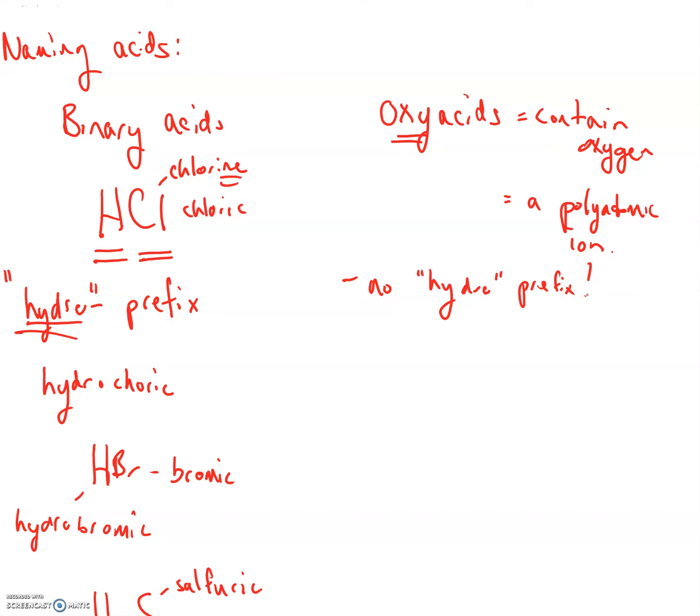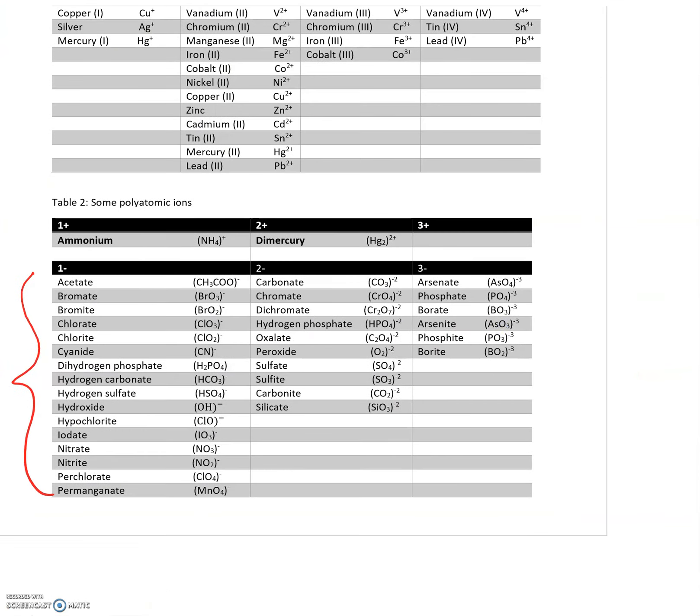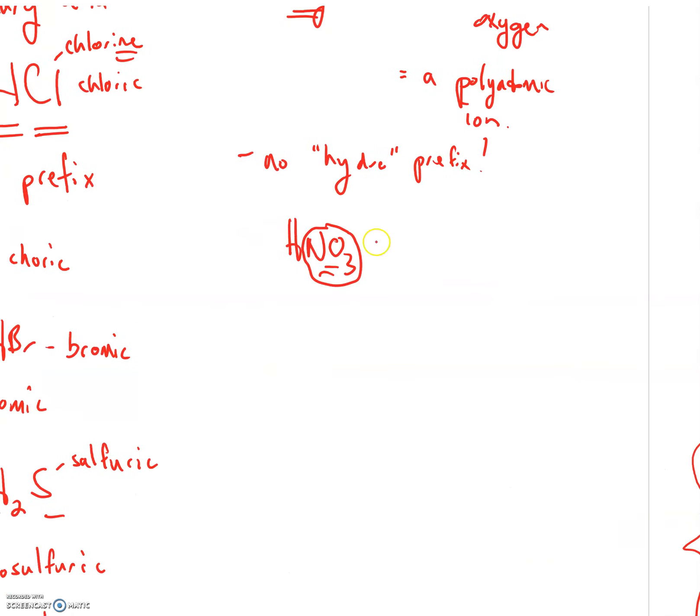All you have to do is find out what the polyatomic ion in it is. For example, now notice how this is not a binary acid. A binary acid only has two elements. This has three. You know that this is an oxy acid. So we want to find what the name of this polyatomic ion is. That's what this guy is for. You're looking for a polyatomic ion NO3 right there. It's called nitrate.